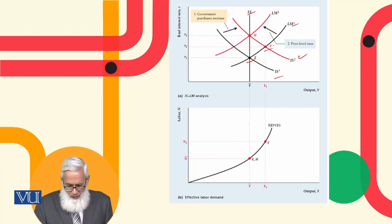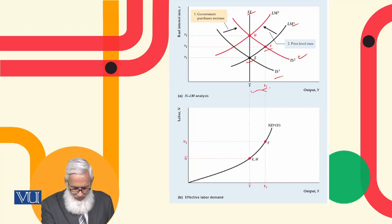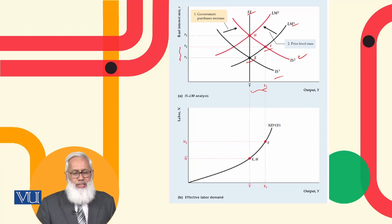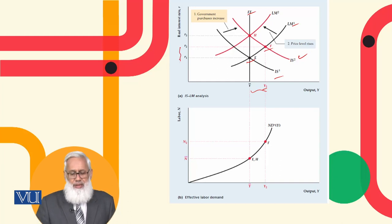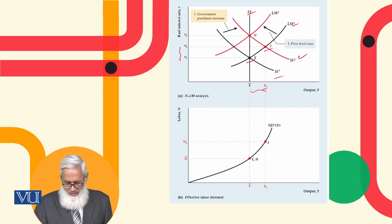In the short run, the equilibrium shifts from E to F, with output moving to a higher level. Both output and the real interest rate increase in the short run. This is the fiscal policy impact on real variables in the Keynesian model.